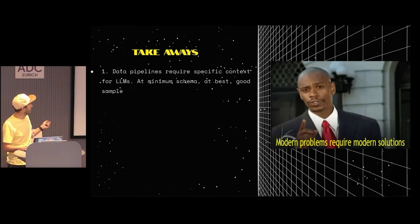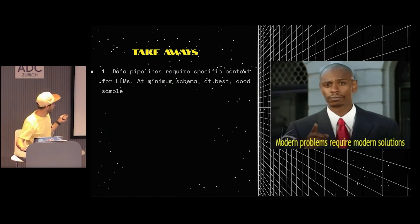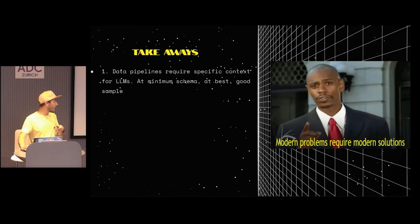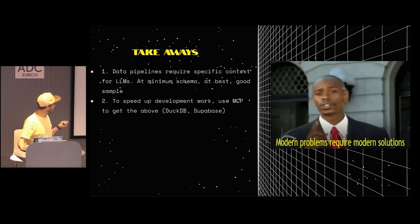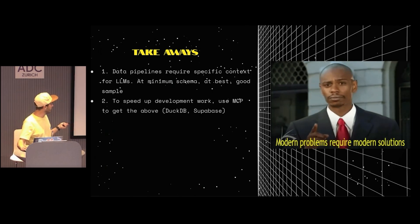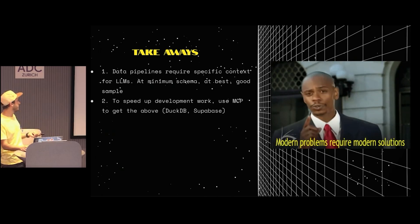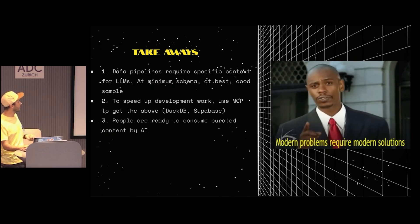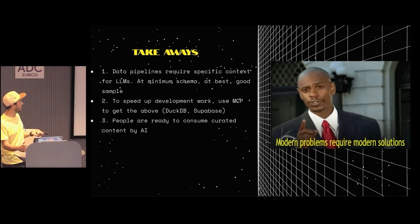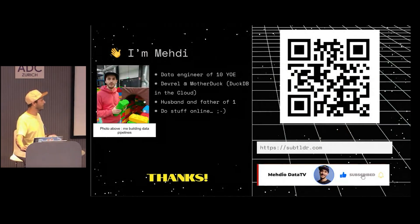The takeaways: data pipelines require specific context for LLMs — at minimum a schema, and ideally a good sample of data to speed up development. You can use MCP to get that, like DuckDB MCP or Supabase MCP. And people are ready to consume curated content generated by AI. That's my honest truth, and that's it for my talk.